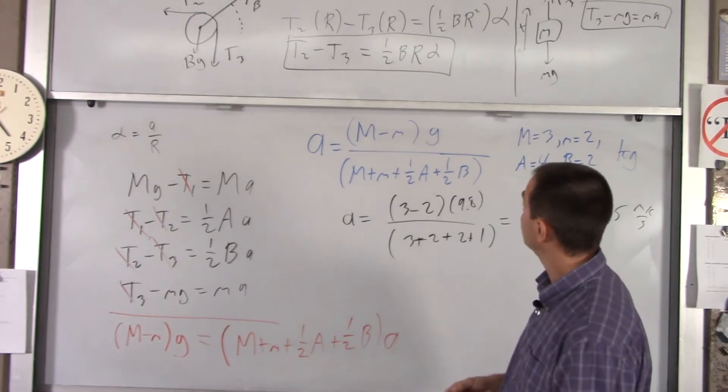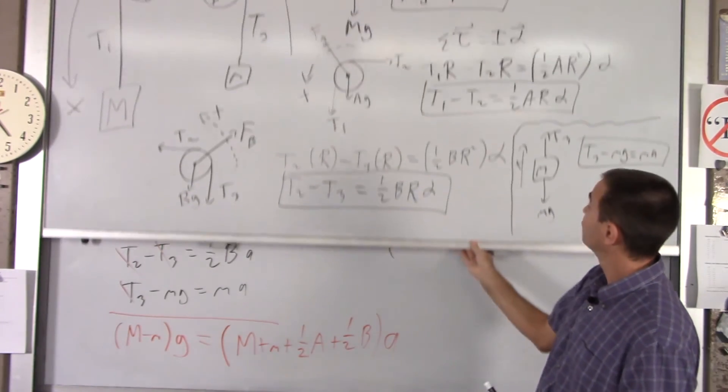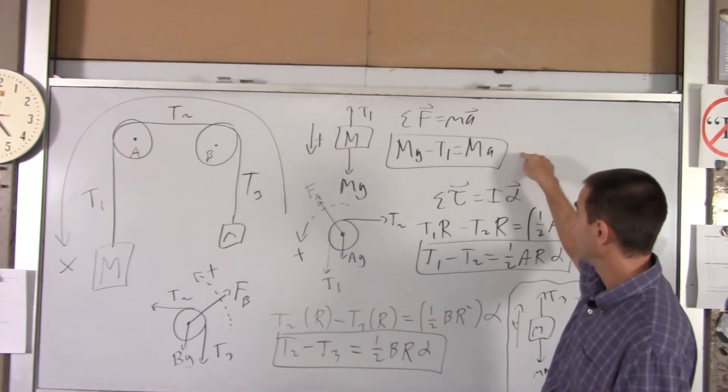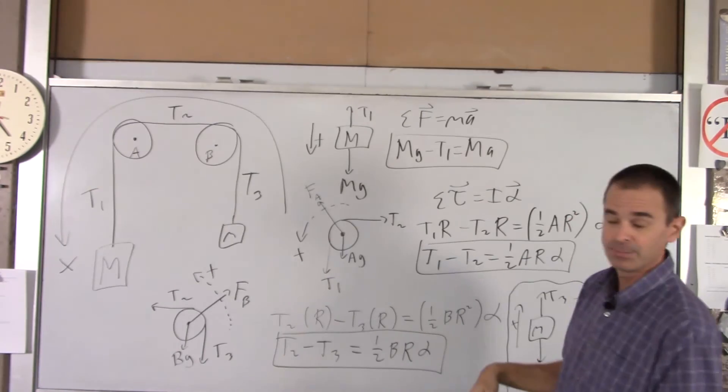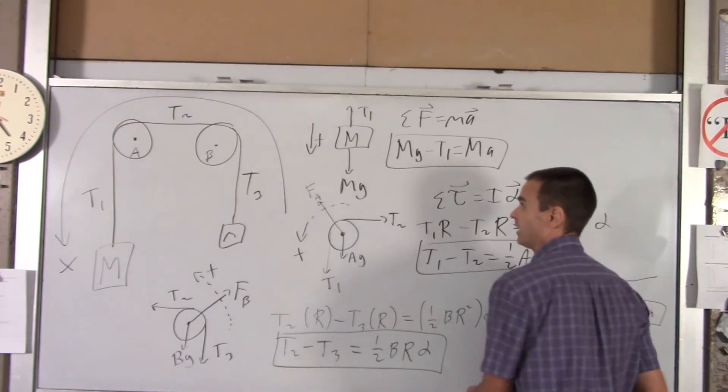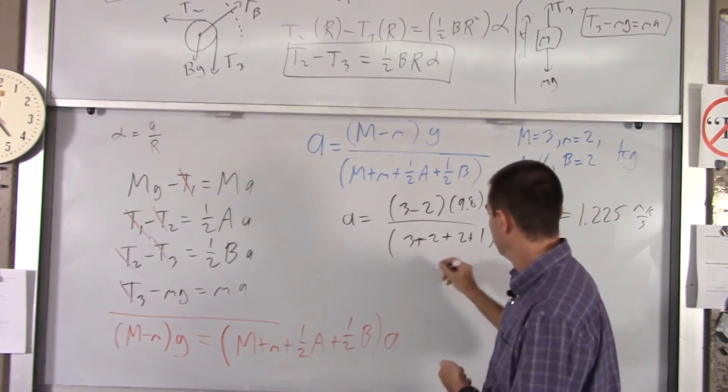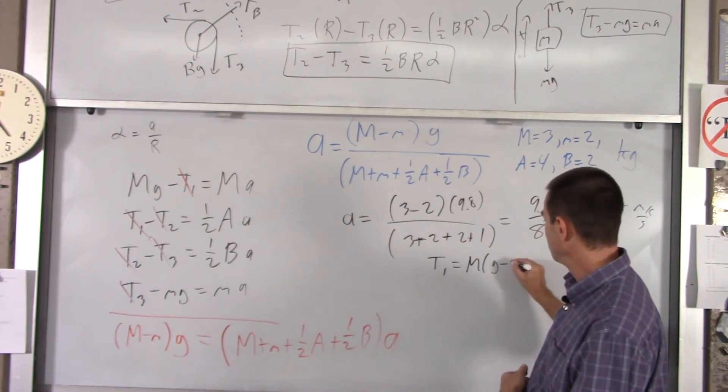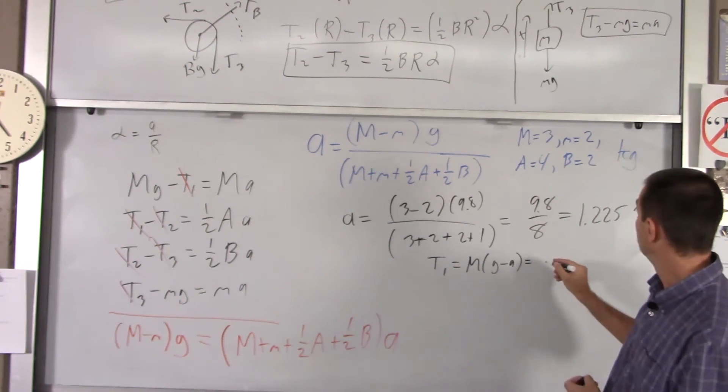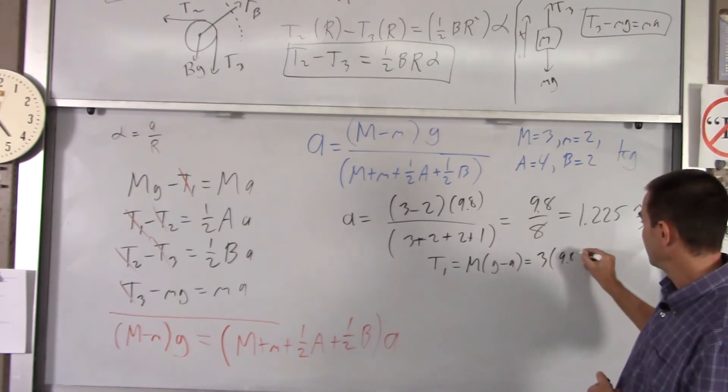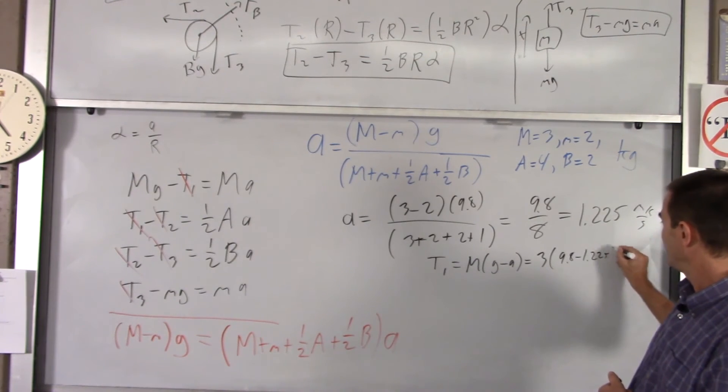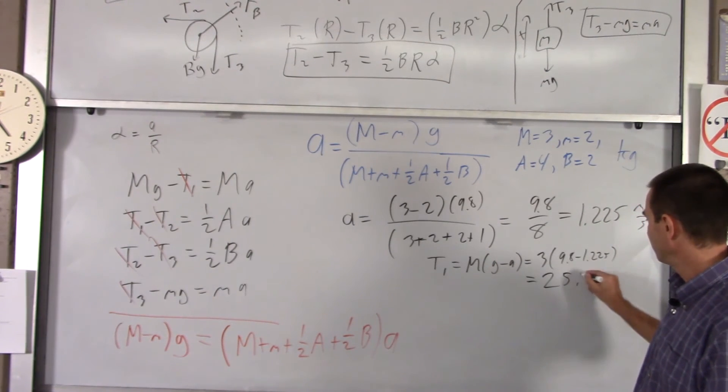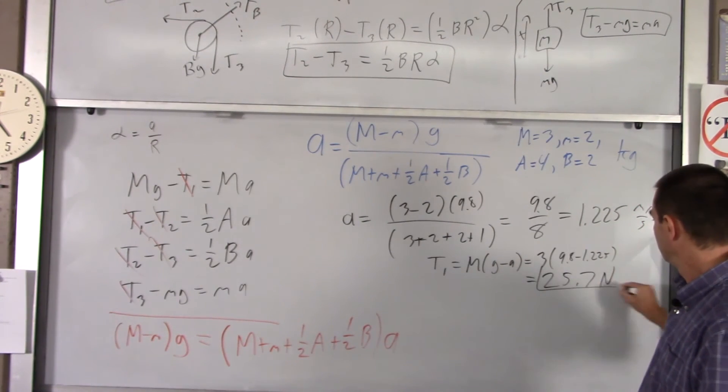To find the tensions, all you do is go back and plug that in where you can. I'll find T1 first. T1 is big MG minus big MA, or T1 equals big M times G minus A, which is big M was 3, and we got 9.8 minus 1.225. So T1, you get 25.7 Newtons.